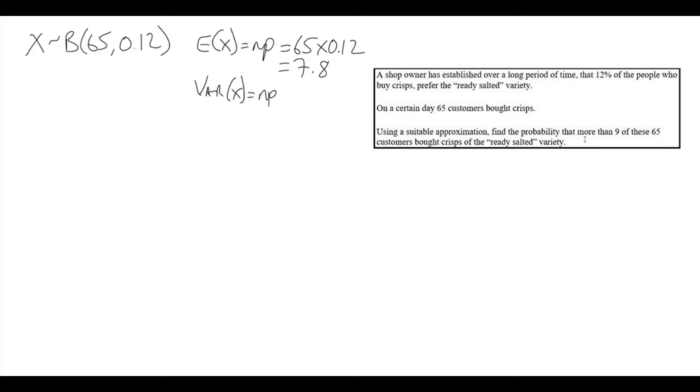The variance is npq, so that's going to be 7.8 multiplied by 0.88, and that gives us 6.864. So now that I've got the expectation and the variance, I can write the normal distribution.